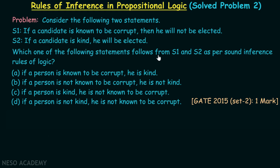Which one of the following statements follows from S1 and S2 as per sound inference rules of logic? Is it: (A) if a person is known to be corrupt, he is kind? (B) if a person is not known to be corrupt, he is not kind? (C) if a person is kind, he is not known to be corrupt? Or (D) if a person is not kind, he is not known to be corrupt?